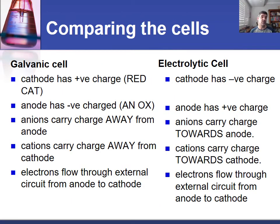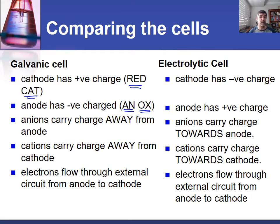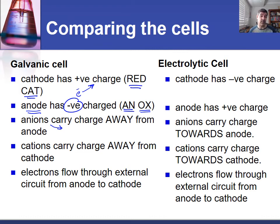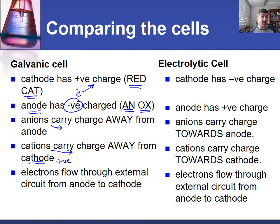One of the most important things you can do is compare galvanic and electrolytic cells. Both cells have reduction occurring at the cathode and oxidation occurring at the anode — mnemonics like 'red cat' and 'an-ox' always hold true regardless of which cell we're talking about. In a galvanic cell, because oxidation occurs at the anode, the anode has a negative charge and electrons flow toward the cathode, which has a positive charge. Anions are pushed away from the negative anode carrying charge away, while the positive cathode repels cations which also carry charge away. Electrons flow through the external circuit from the anode to the cathode.